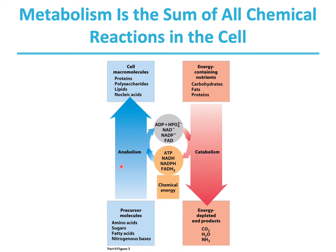Metabolism involves two different steps: anabolism and catabolism. Catabolism is the degradative phase of metabolism in which organic nutrients are converted into smaller, simpler end products, such as lactic acid, carbon dioxide, and ammonia. Catabolic pathways release energy, some of which is conserved in the form of ATP, NADH, NADPH, and FADH2. The rest is lost as heat.